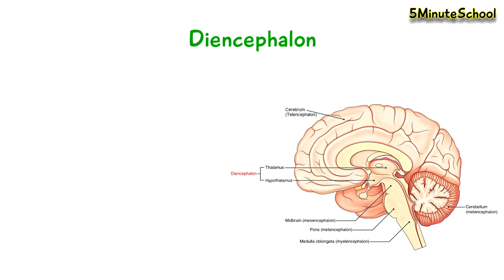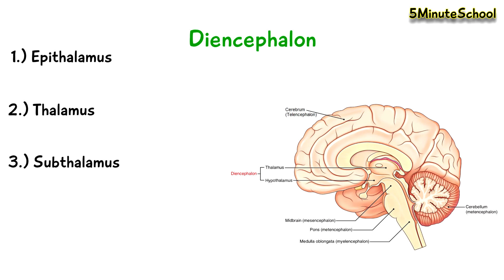The diencephalon is another component of the brain and it's mostly hidden from view when looking from the outside. You can divide the diencephalon into four parts: the epithalamus, the thalamus, the subthalamus, and the hypothalamus. It's hard to describe the exact function of the diencephalon because these four substructures all have different functions.